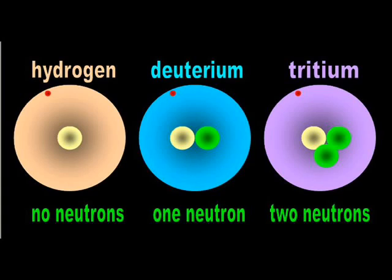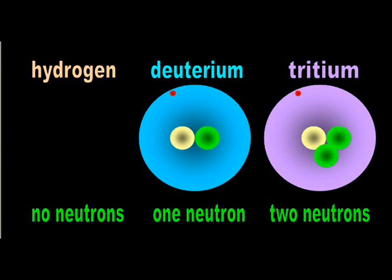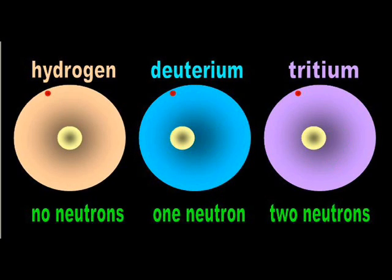However, deuterium and tritium are two isotopes of hydrogen. Hydrogen has one proton and no neutrons. Deuterium has one proton and one neutron, and tritium has one proton and two neutrons.